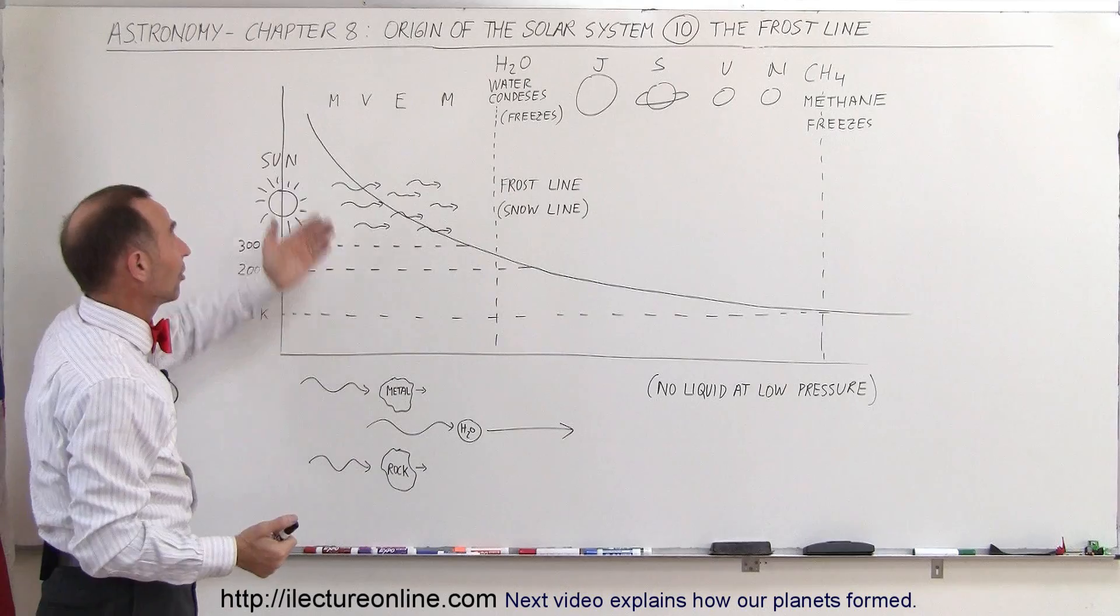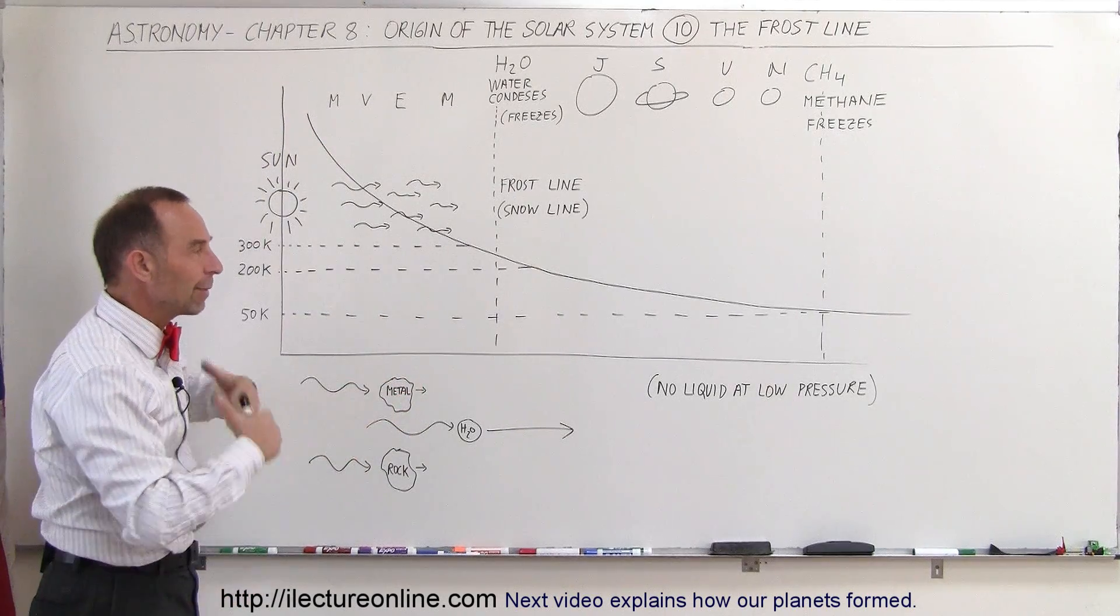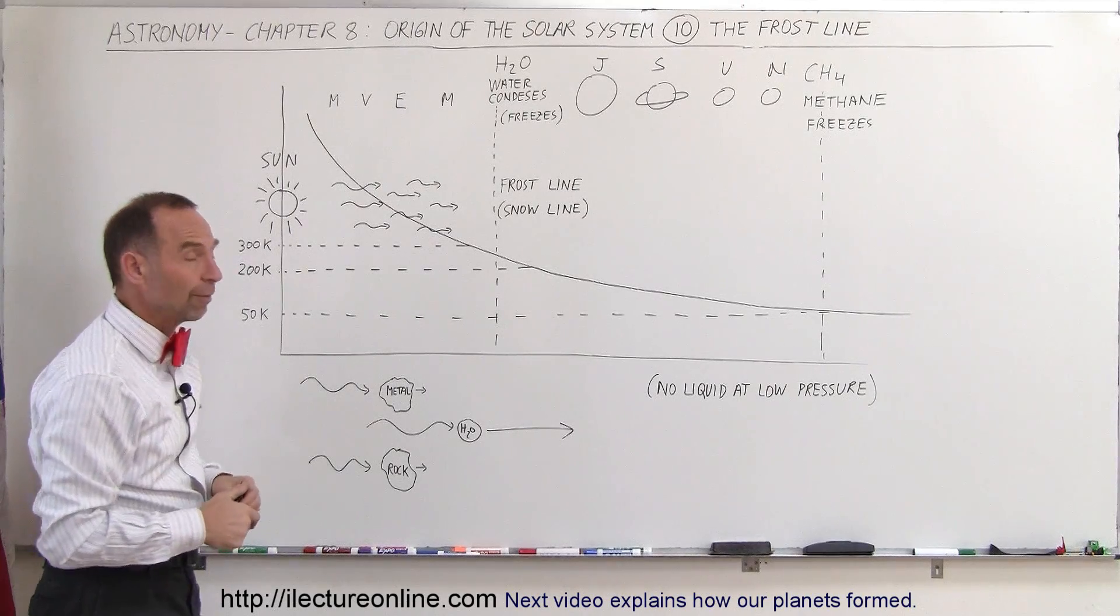Remember, the terrestrial planets on average are half metal, half rock, and that would be the leftover from that period in the beginning of the solar system.